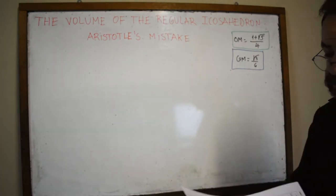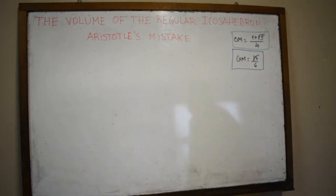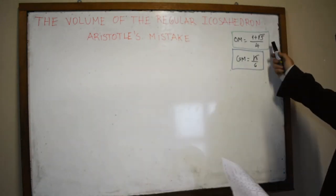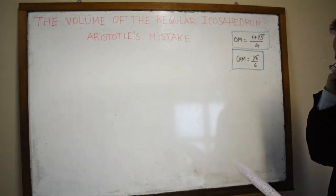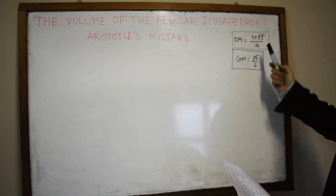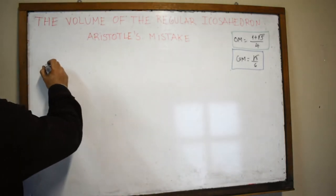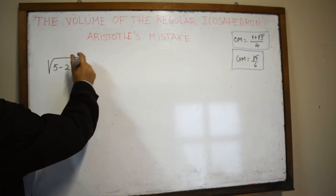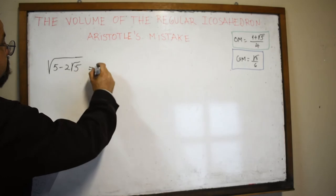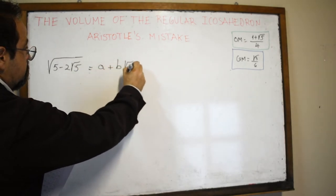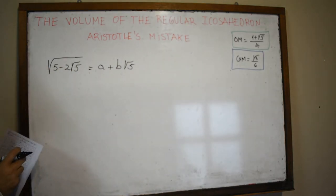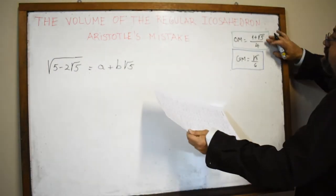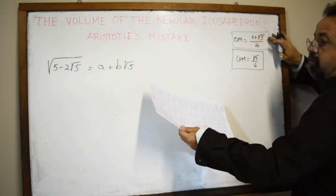Let's consider the algebra involved. The golden number has a square root, requiring us to work with numbers of this type. Sometimes we need to compute expressions like √5 minus 2√5, and we want a result of the form a + b√5 — that is, a single square root — like the golden number itself, which is 1/2 + (1/2)√5.